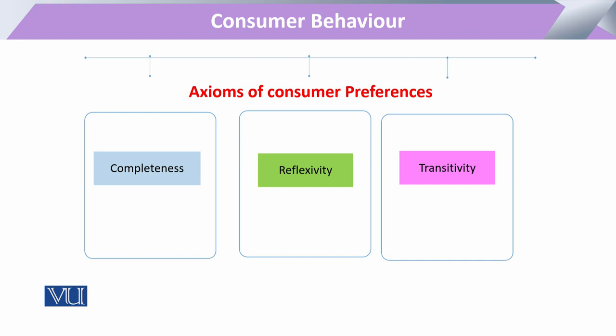Basically there are three pillars which are our axioms. Number one is completeness, number two is reflexivity, and the third is transitivity.